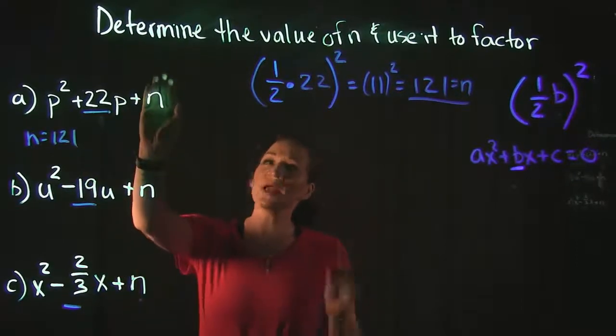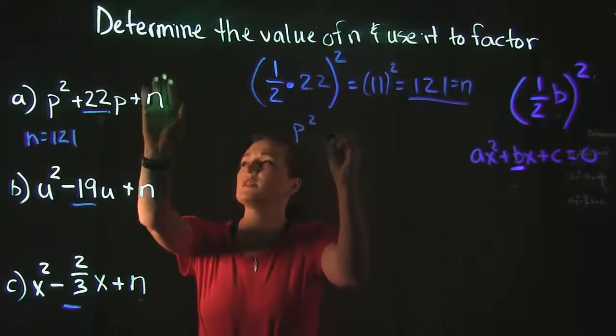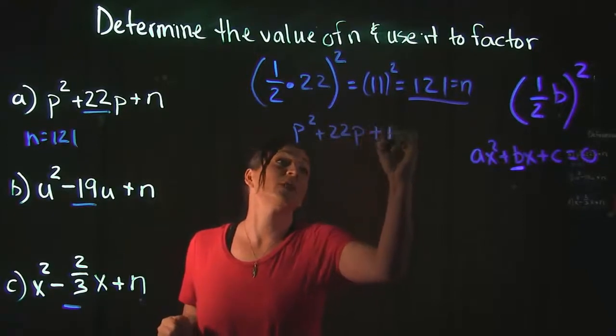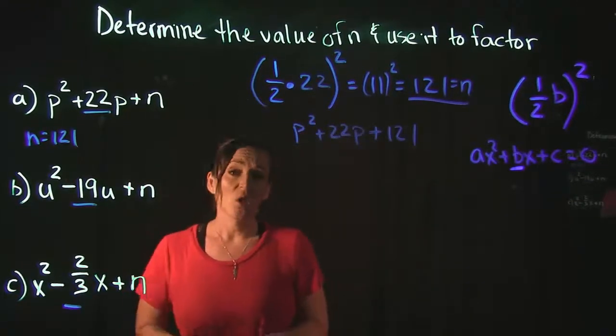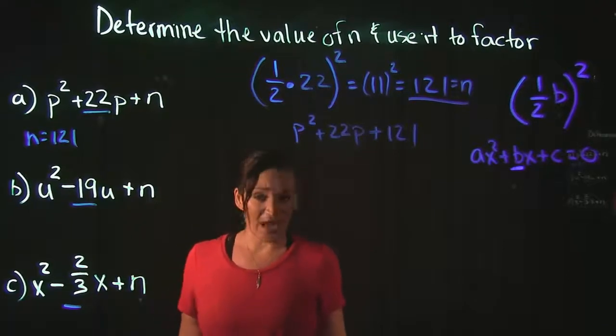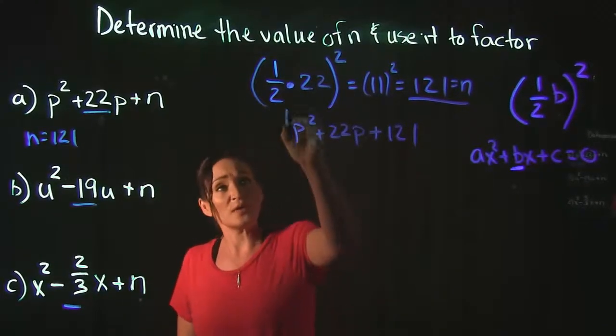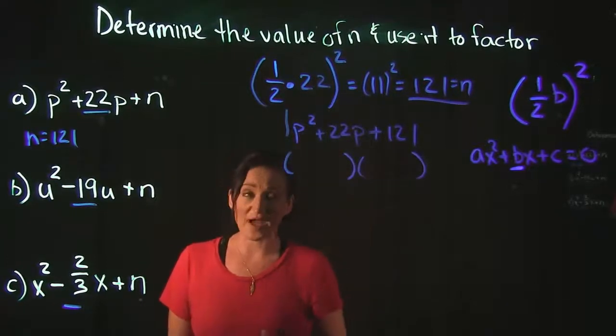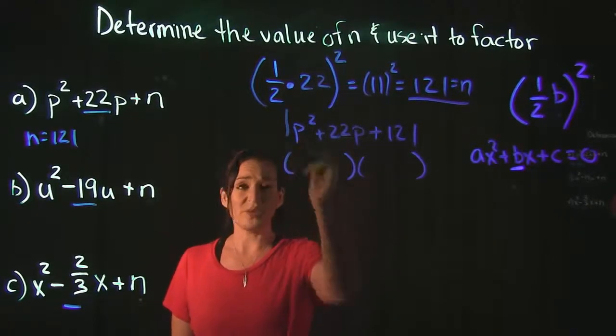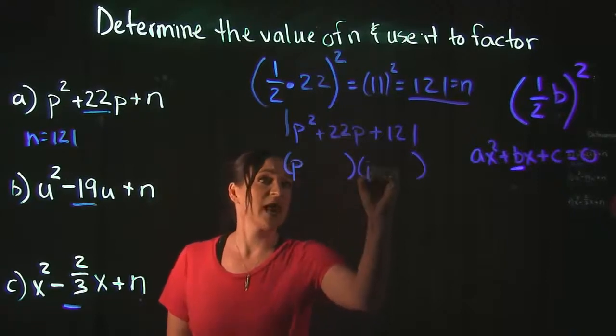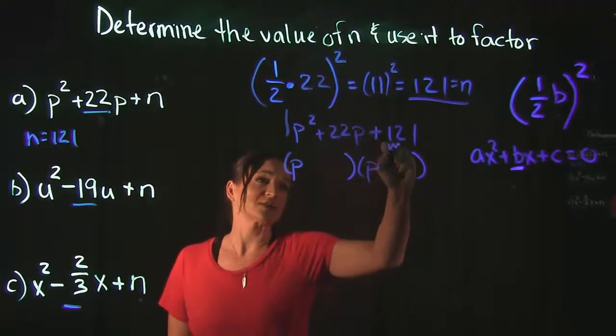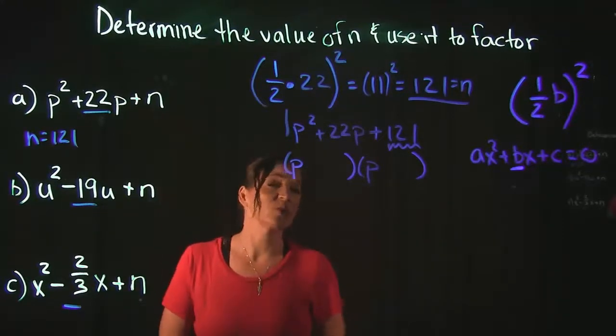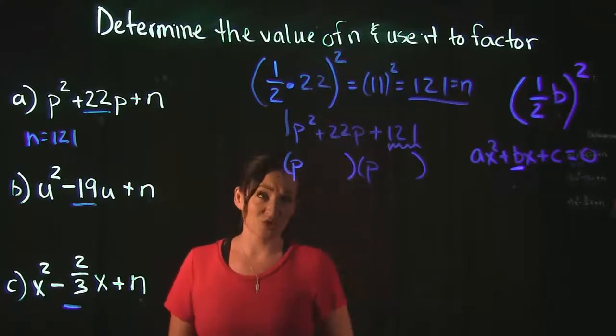So if we plug in 121 for n, that would give us p squared plus 22p plus 121. We now need to wrap up this problem by factoring it. Now this is factoring the trinomial with a leading coefficient of 1, so we can go straight to our parentheses and factor. Our first term p squared gives us p times p. Our last term, 121, we're looking for what factors to get 121 but adds or subtracts to get 22.